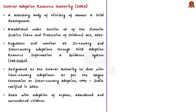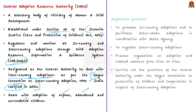The Central Adoption Resource Authority, or CARA, is a statutory body of the Ministry of Women and Child Development, established under Section 68 of the Juvenile Justice Care and Protection Act of 2015. CARA regulates and monitors all in-country and inter-country adoptions through the Child Adoption Resource Information and Guidance System. CARA is designated as the central authority to deal with inter-country adoptions in accordance with the Hague Convention on Inter-Country Adoption of 1993, ratified by India in 2003.